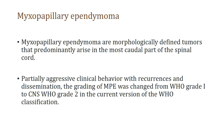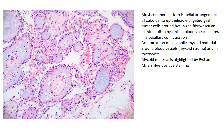Myxopapillary ependymoma is a morphologically defined entity showing partial aggressive clinical behavior, recurrence, and dissemination. Therefore, it has been upgraded in the recent WHO from WHO grade 1 to WHO grade 2. The slide shows characteristic radial distribution of cuboidal to epithelioid elongated glial cells around hyalinized fibrovascular cores with characteristic myxoid change. Accumulation of basophilic myxoid material is highlighted by PAS or Alcian Blue staining.